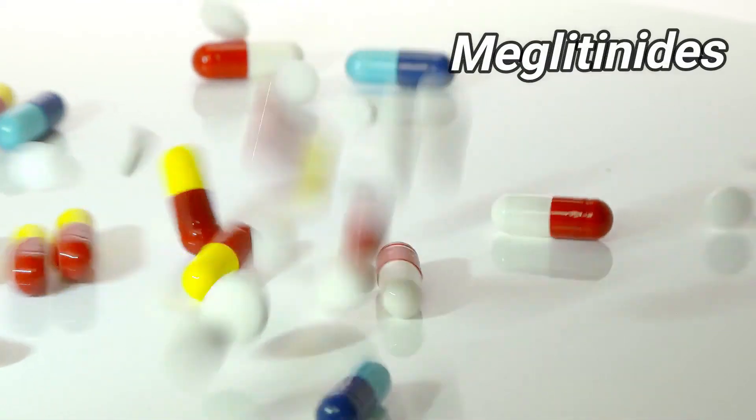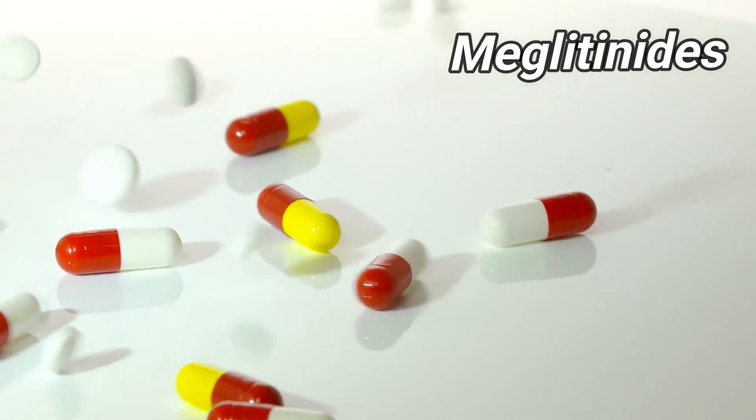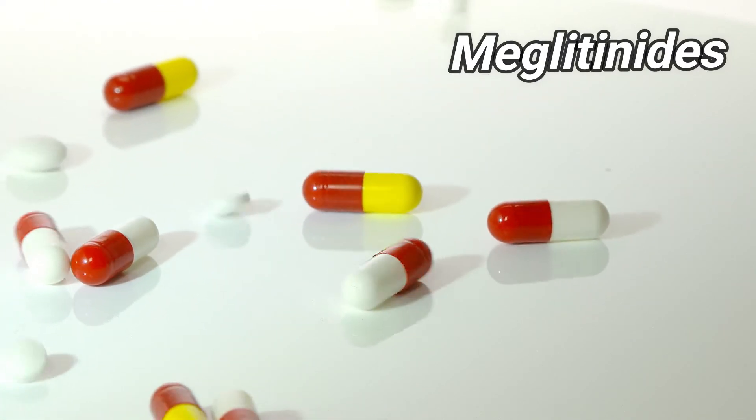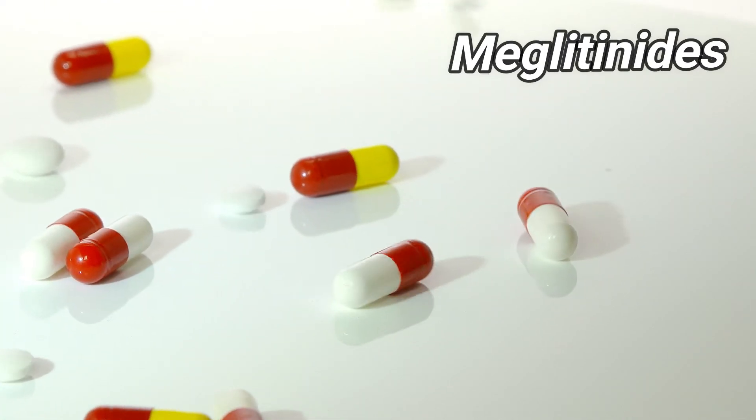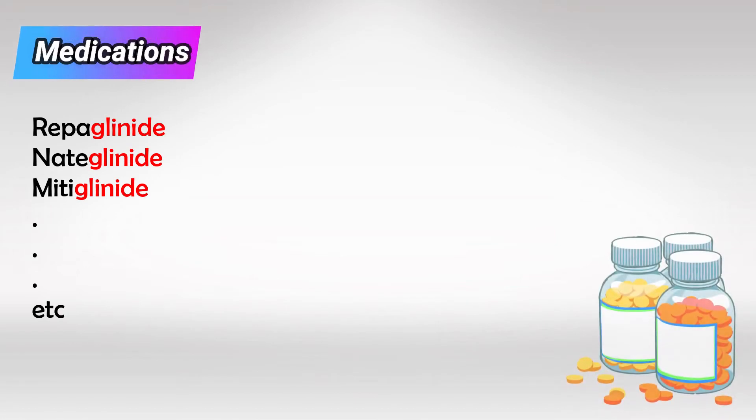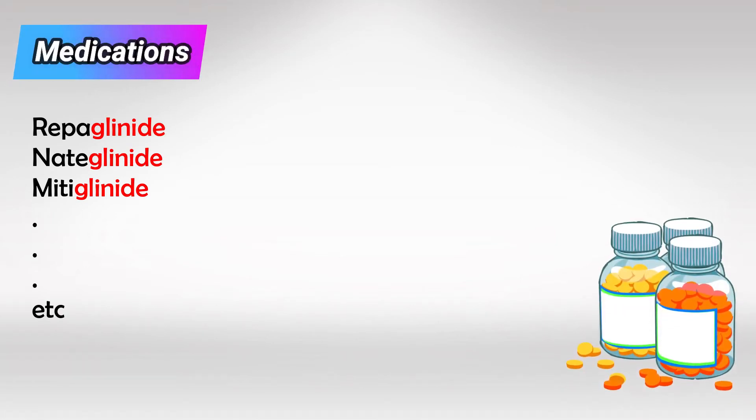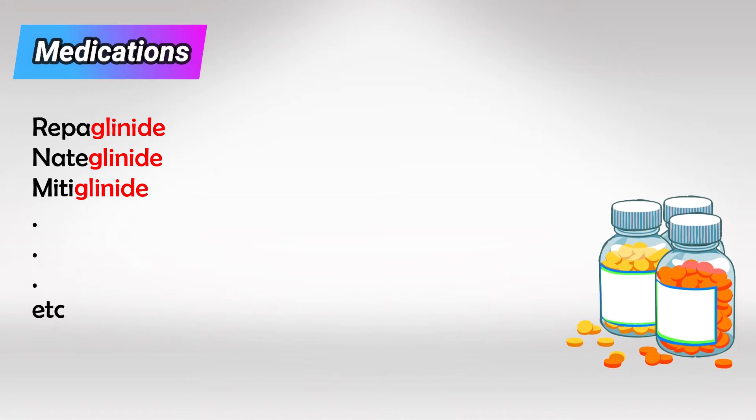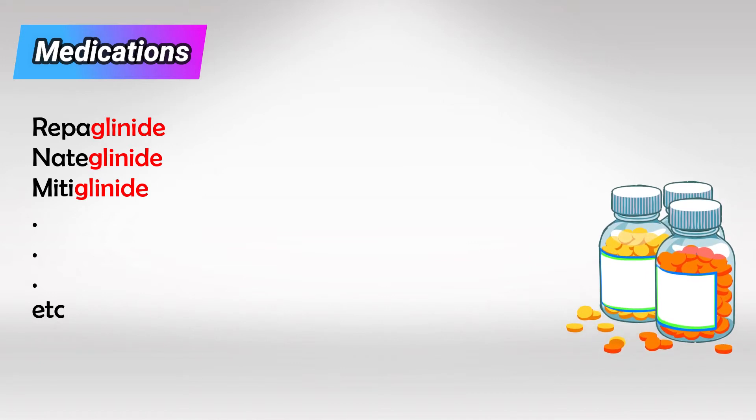Welcome back. In this video we'll talk about the antidiabetic drugs meglitinides. These are the drugs ending with the suffix glinide, and they're commonly combined with metformin to treat type 2 diabetes.